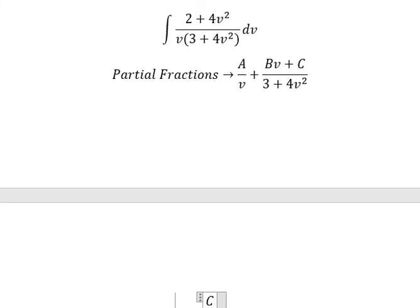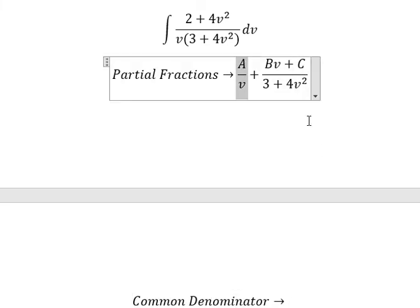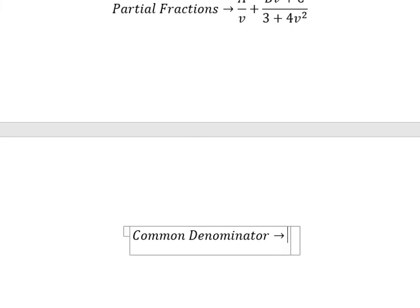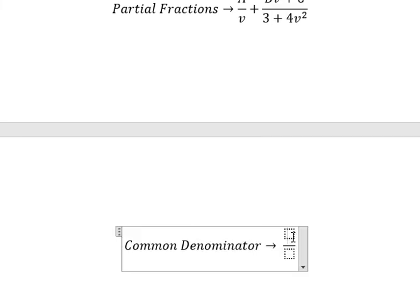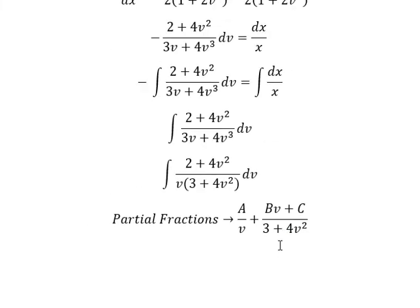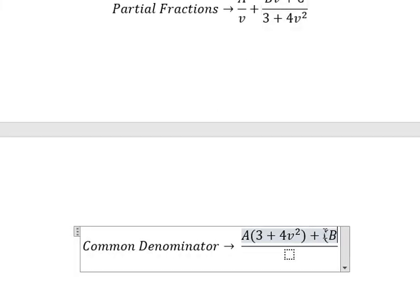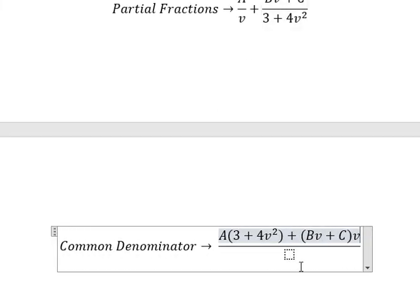Now we do common denominator. This term is missing the factor 3 plus 4v squared, so capital A is multiplied by that. And this term is missing v, so Bv plus C is multiplied by v.